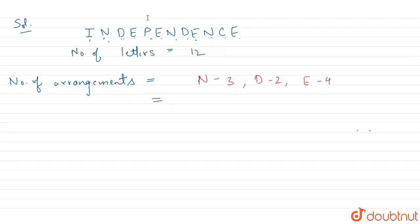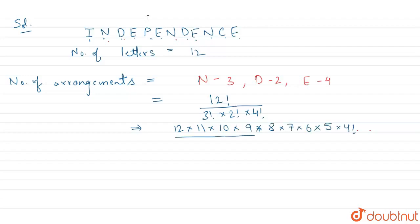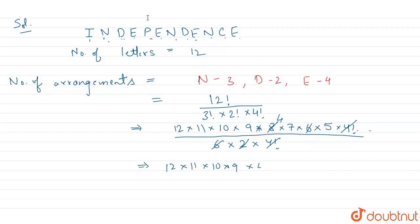So now to find the number of arrangements, it will be 12 factorial divided by 3 factorial into 2 factorial into 4 factorial. We can write it as 12 into 11 into 10 into 9 into 8 into 7, with 3 factorial as 6, 2 as 2, and 4 factorial cancelling out. After cancellation we get 12 into 11 into 10 into 9 into 6 into 5, which gives us 1,32,00. This is our total number of arrangements.